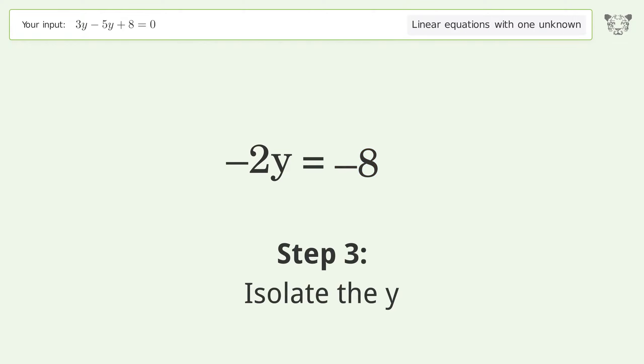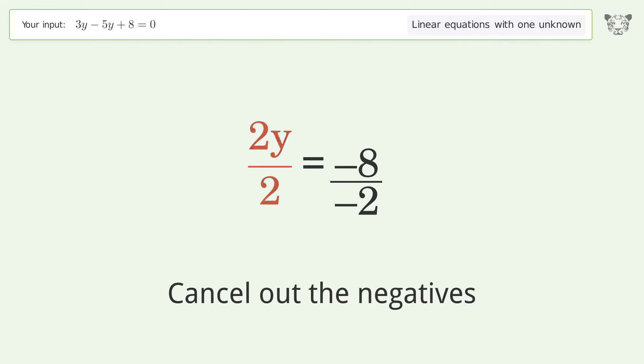Isolate the y. Divide both sides by negative 2 and cancel out the negatives. Simplify the fraction.